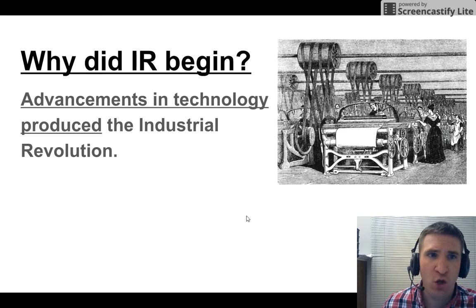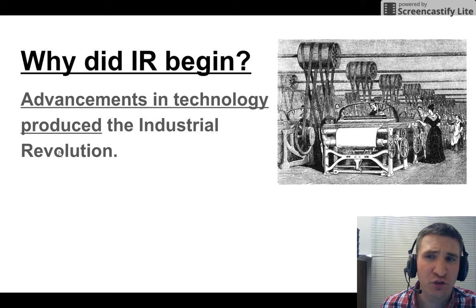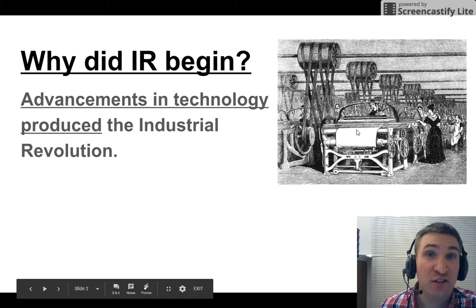Why did the industrial revolution begin? Advancements in technology produced the industrial revolution — technology like this machine here.